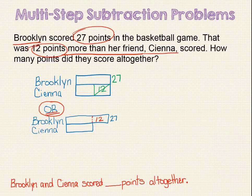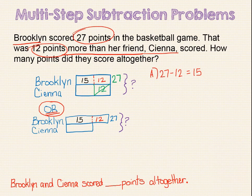The bracket and question marks should surround the entire model since we need to find out how many points they scored altogether. We can also show that this piece of Brooklyn's model represents 12 points. Since we know that Brooklyn scored 27 points and this little piece is 12, we can subtract 12 from 27 to find that the remaining portion of her bar represents 15 points. The 15 and the 12 total up to 27 points scored by Brooklyn. Since Sienna's piece is equal to the first section of Brooklyn's bar, Sienna scored 15 points. 27 plus 15 equals 42. Brooklyn and Sienna scored 42 points altogether.